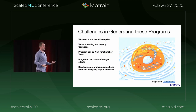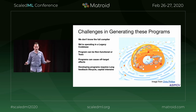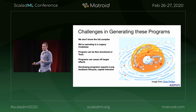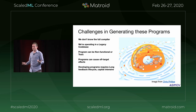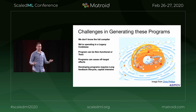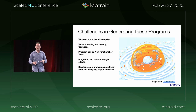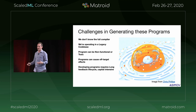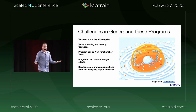There are many challenges in generating these programs. Using the software analogy: we don't really know the full compiler — there are tremendous numbers of reactions inside a cell that haven't been characterized. We're operating in a legacy code base — imagine a multi-billion-year evolved program. The program can be non-functional or toxic. There are concerns around off-target effects — will this foreign DNA interact with other aspects of the host cell's genome beyond what was intended? And probably most importantly, feedback cycles can be quite long — many weeks or months — and if at the end, all that happens is your cells die with no other information, that's incredibly frustrating.